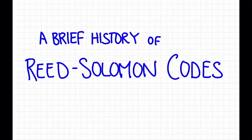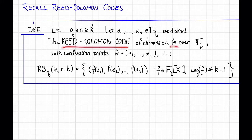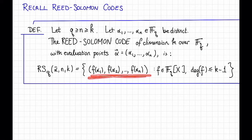In this video, we'll go over a really brief history of Reed-Solomon codes and mention a few of their many applications. Recall the definition of Reed-Solomon codes: we have n distinct evaluation points alpha 1 through alpha n, and parameters q, n, and k. The Reed-Solomon code of dimension k over F_q with those evaluation points is defined as the set of all vectors which are evaluations on those evaluation points of low-degree polynomials.